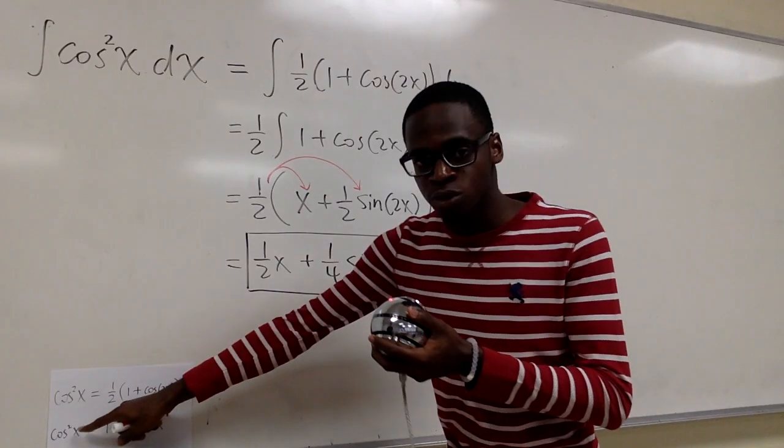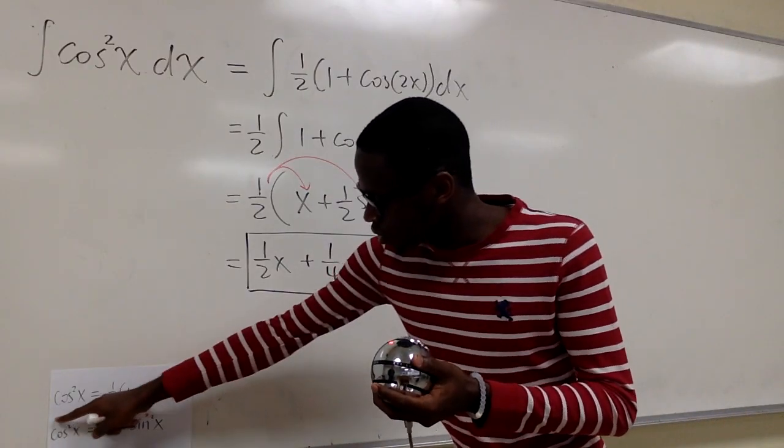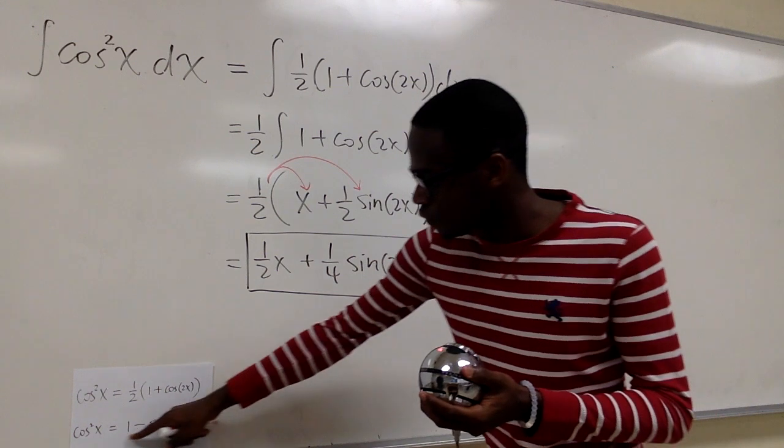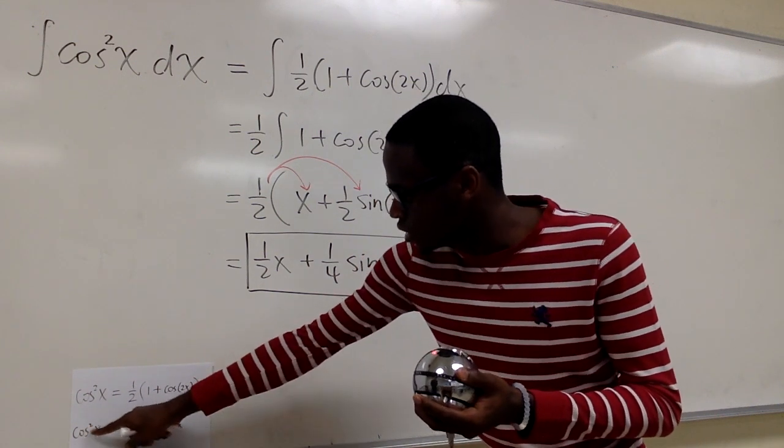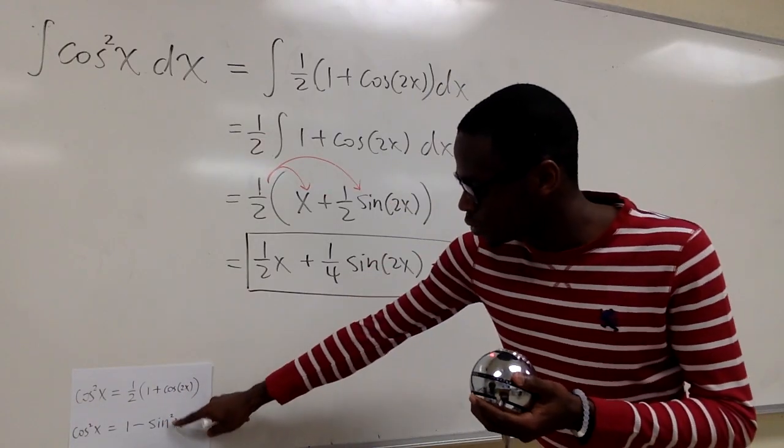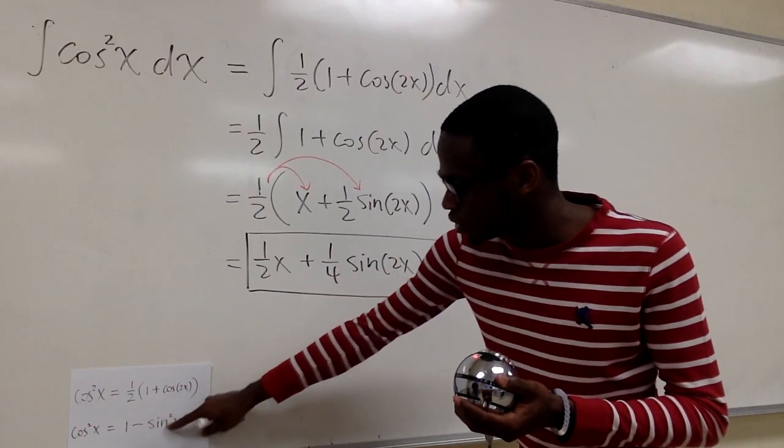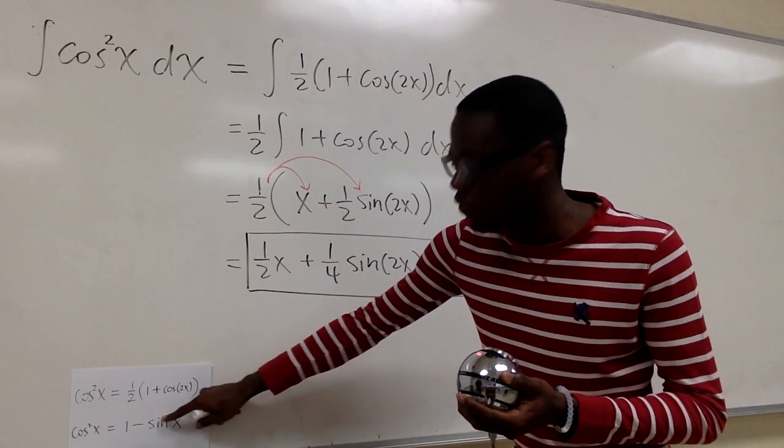Now we could have used the other reduction formula, but it's going to be the same difficulty because see how we have a cosine squared x, we also have a sine squared x and you have to do pretty much the same thing here if you want to solve this integral.